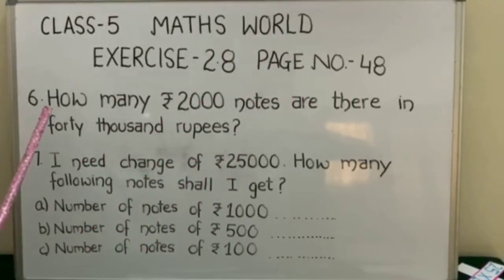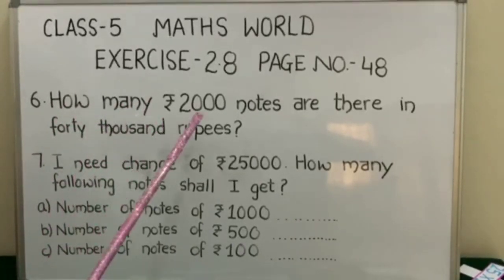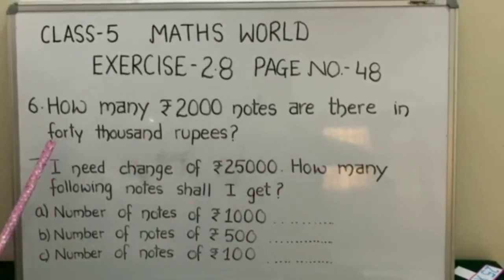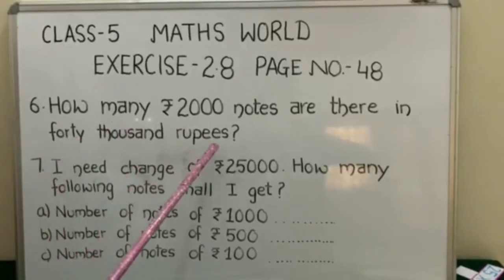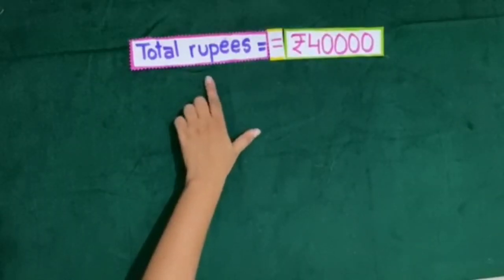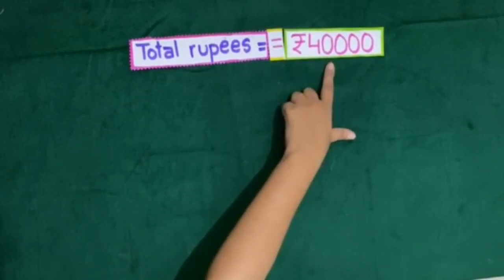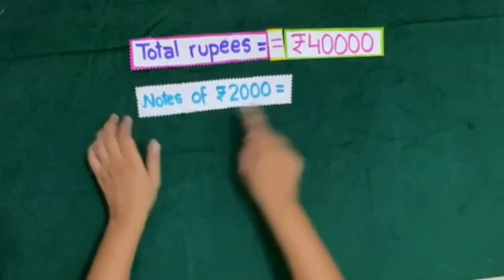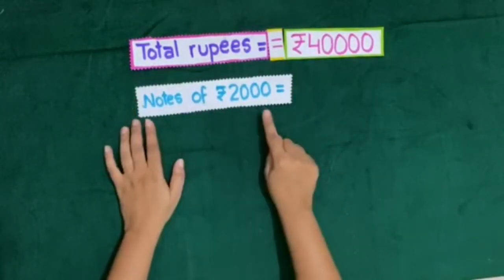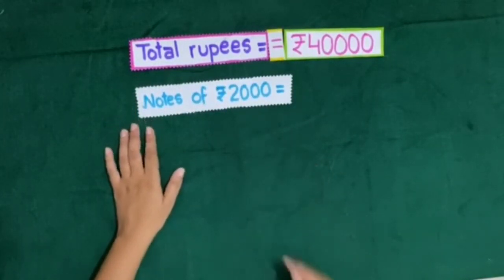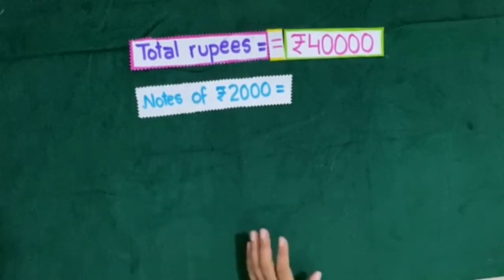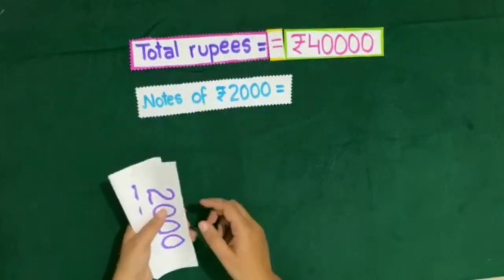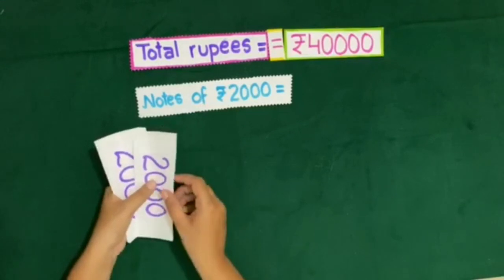The question is: how many rupees 2000 notes are there in 40,000 rupees? Total rupees we have is rupees 40,000. So now we will see how many notes of rupees 2000 we need. Let us count these 2000 rupee notes to get 40,000 rupees.